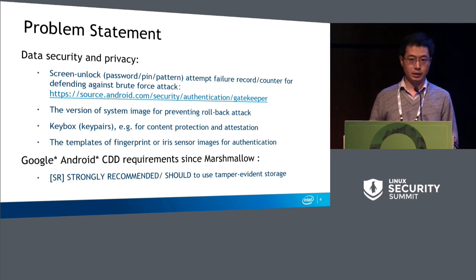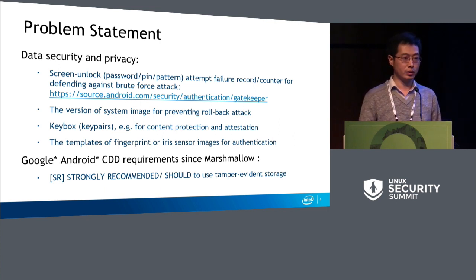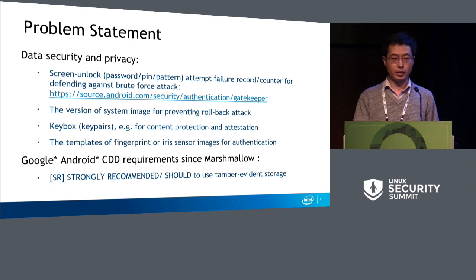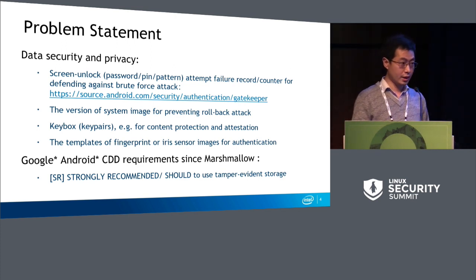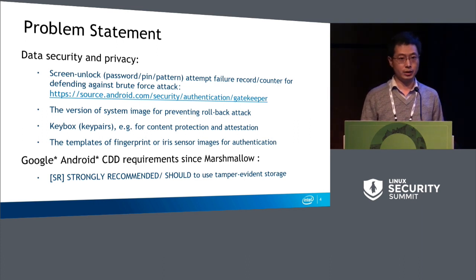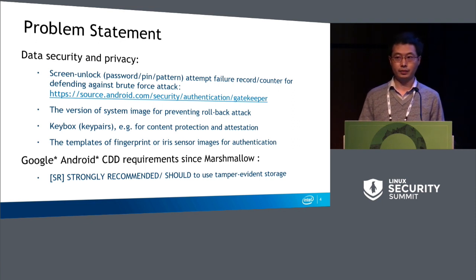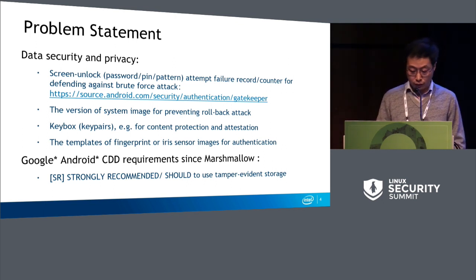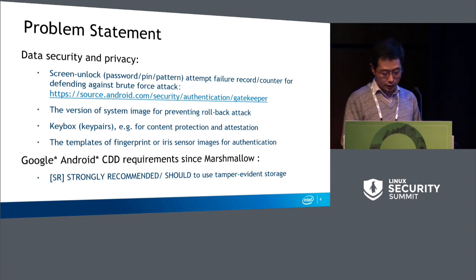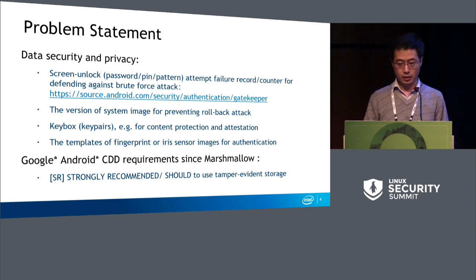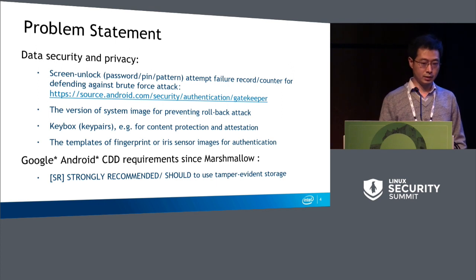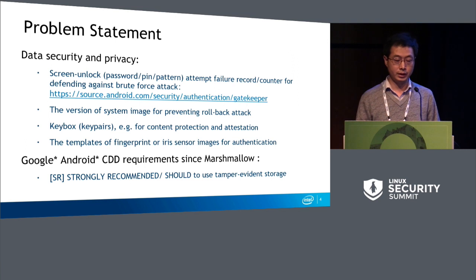There are other requirements as well. We need secure storage to save the system image version so we can disallow attackers from downgrading to an old and vulnerable version. We also need secure storage to save factory-provisioned key boxes — for content protection, you need those key boxes to decrypt the content key so you can play back movies. And for attestation private keys. For device fingerprint, you need secure storage to save the fingerprint template data. This is not only about security but also privacy, because the fingerprint template data may be used to uniquely identify a person.